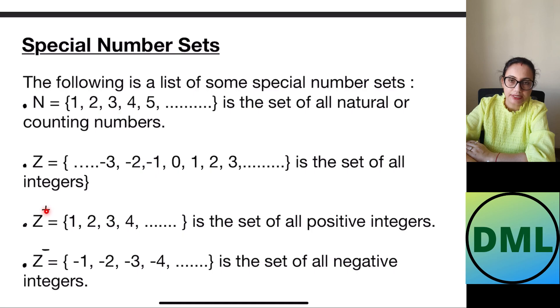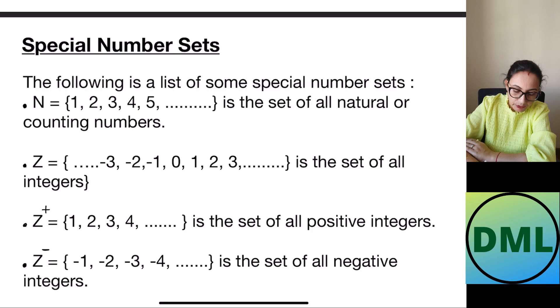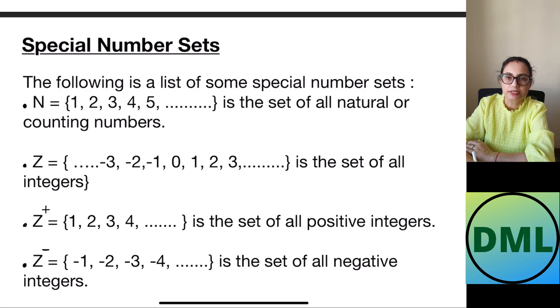If I take Z plus Z is an integer but I am taking only positive integers. You are going to write 1, 2, 3, 4, 5. These are all the set of positive integers.